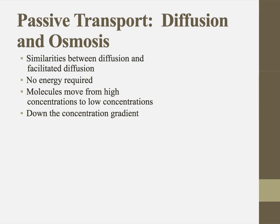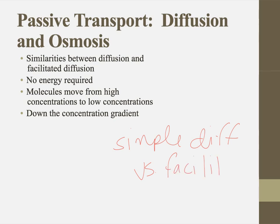Let's talk about passive transport. People often get confused between simple diffusion and facilitated diffusion, and it's a classic IB trick to make you think facilitated diffusion is an active process. Before talking about the differences, let's go back to the similarities. First, they're both passive, meaning no energy is required. They both move molecules from areas of high concentration to low concentration — down the concentration gradient. So they are both forms of passive transport.